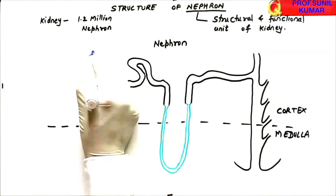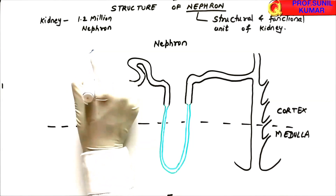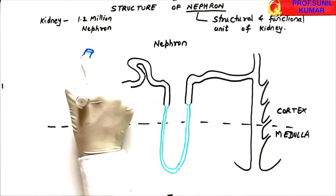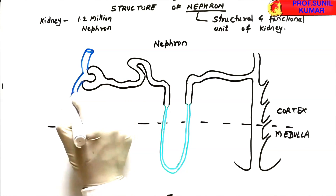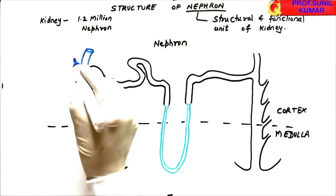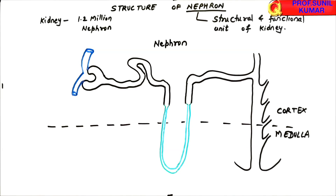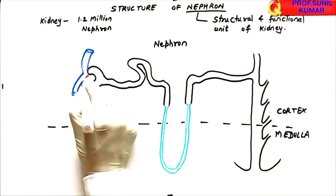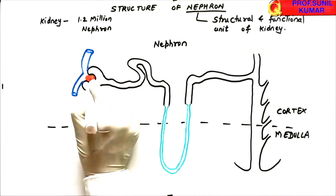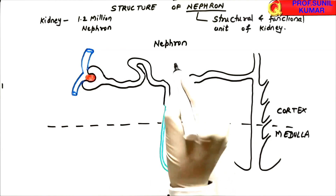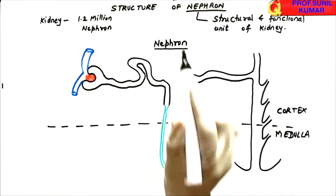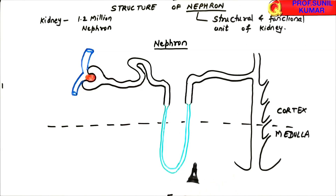The shorter the loop of Henle, the less concentrated the urine. We draw the afferent arteriole, which is a little bigger in diameter, and the efferent arteriole, which is smaller in diameter. In the space between them we draw the glomerulus — the dense network of blood capillaries. The glomerulus and Bowman's capsule together make up the Malpighian body.